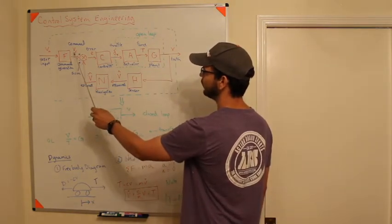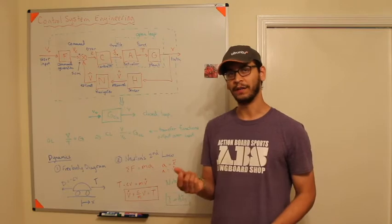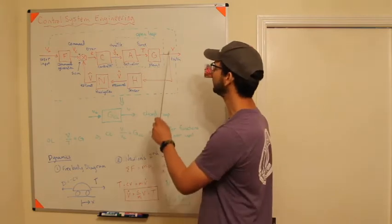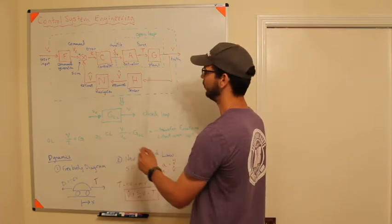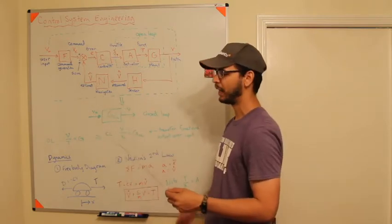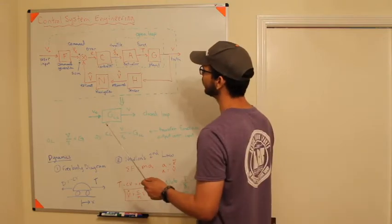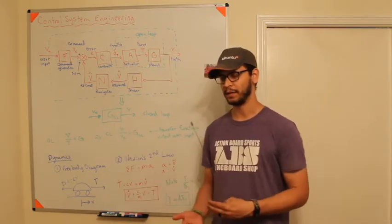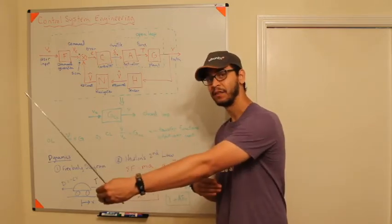When you hit the cruise control button, you interact with a user input that may go through a command generation block. If the problem is simple, command generation is just an identity block. You get a velocity command, V_command, and then a summing block computes V_command minus V-tilde, giving you your error. The goal is to drive that error to zero — to make the estimate of velocity match the commanded velocity.